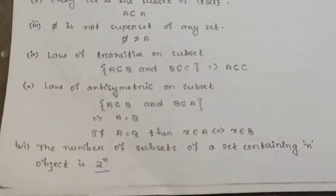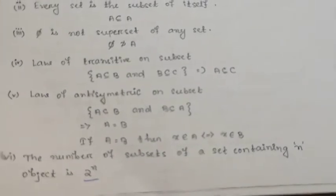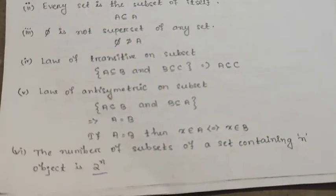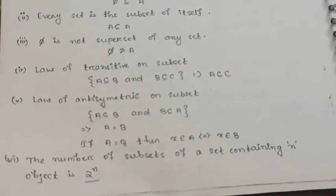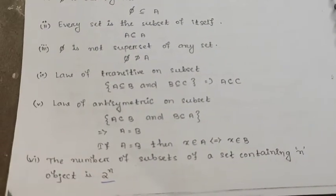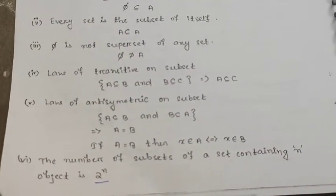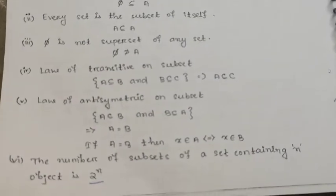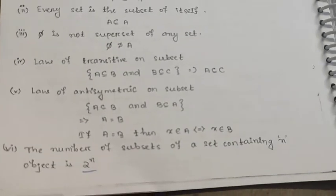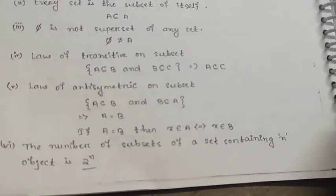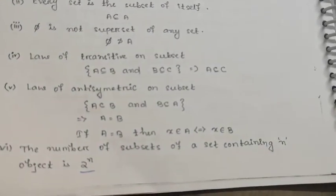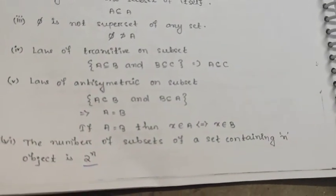The number of subsets of a set containing n objects is 2 to the power n. If we have a set of n objects, the total number of subsets will be 2 to the power n.